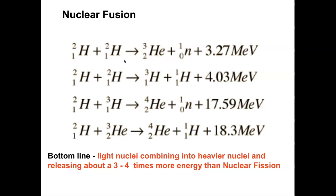How does a star do it? The Sun can perform this reaction because it has a tremendous amount of gravity that holds the fuel in place, and the temperature inside the Sun is tremendously high. With a huge amount of gravity compressing the fuel and with extremely high temperatures, you can force the nuclei together — that's how the Sun does it, but we haven't figured out how to replicate that on Earth.